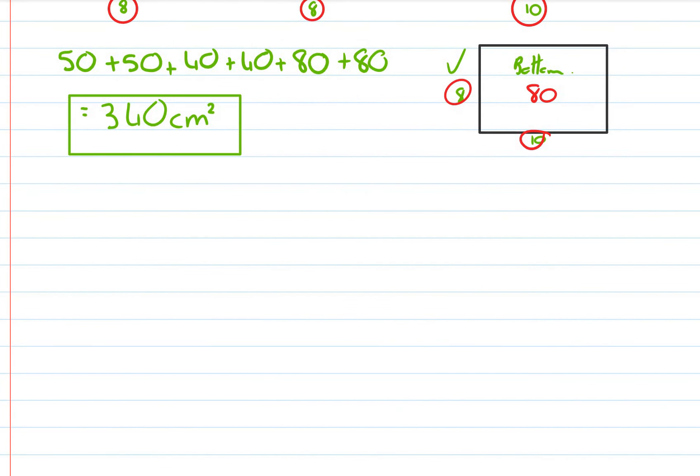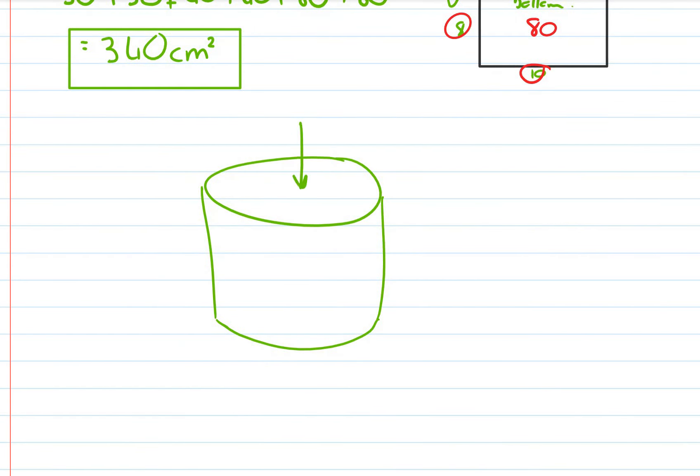And something like this. Okay. So it's a cylinder. Well, think about the cylinder now. We have to get the, if we wanted to get the surface area of the cylinder, we would have to get the top, which is a circle, the bottom, which is a circle.